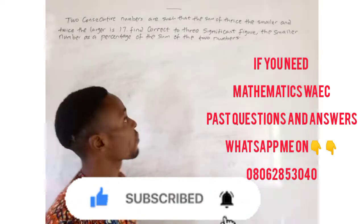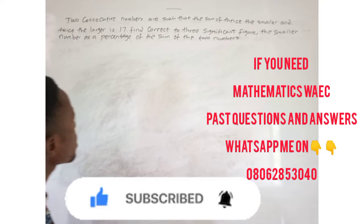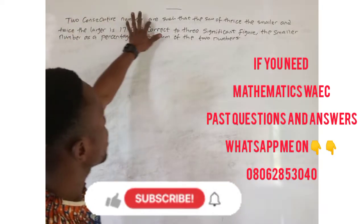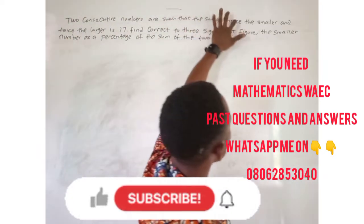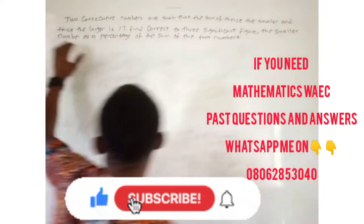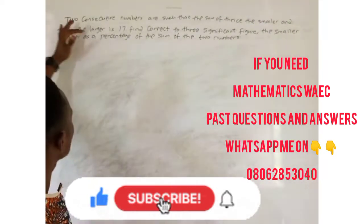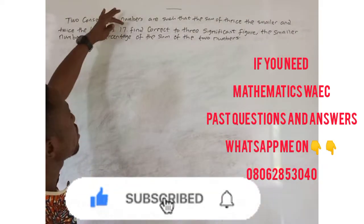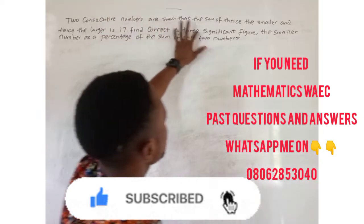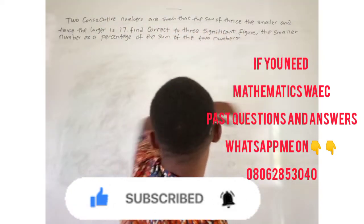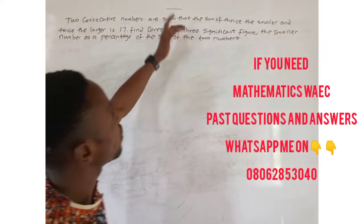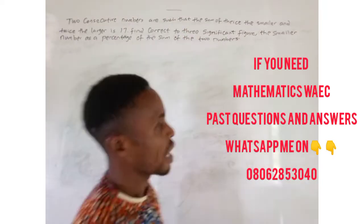Here is the question. This question states that two consecutive numbers are such that the sum of twice the smaller number and twice the larger number is 17. First, find the correct significant figures of the smaller number as a percentage of the sum of the two numbers.